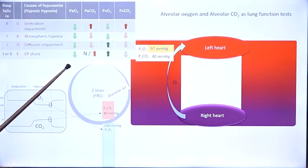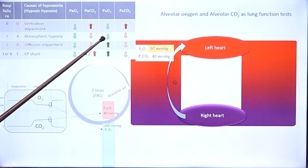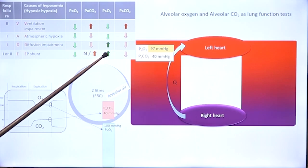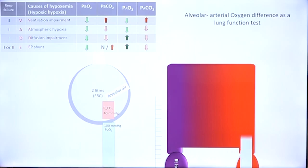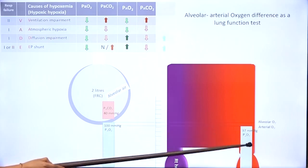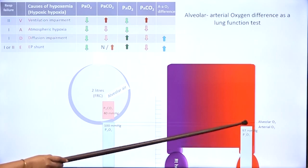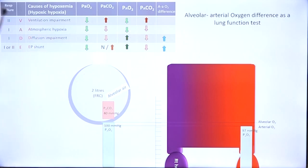We have seen that alveolar oxygen is low in ventilation impairment and atmospheric hypoxia, and is higher than normal in diffusion impairment and extrapulmonary shunt. What about alveolar-arterial oxygen difference? Arterial oxygen is slightly lower than alveolar oxygen, and the difference between the two is computed as the alveolar-arterial oxygen difference. If this value is more than normal, you know that there is diffusion impairment.